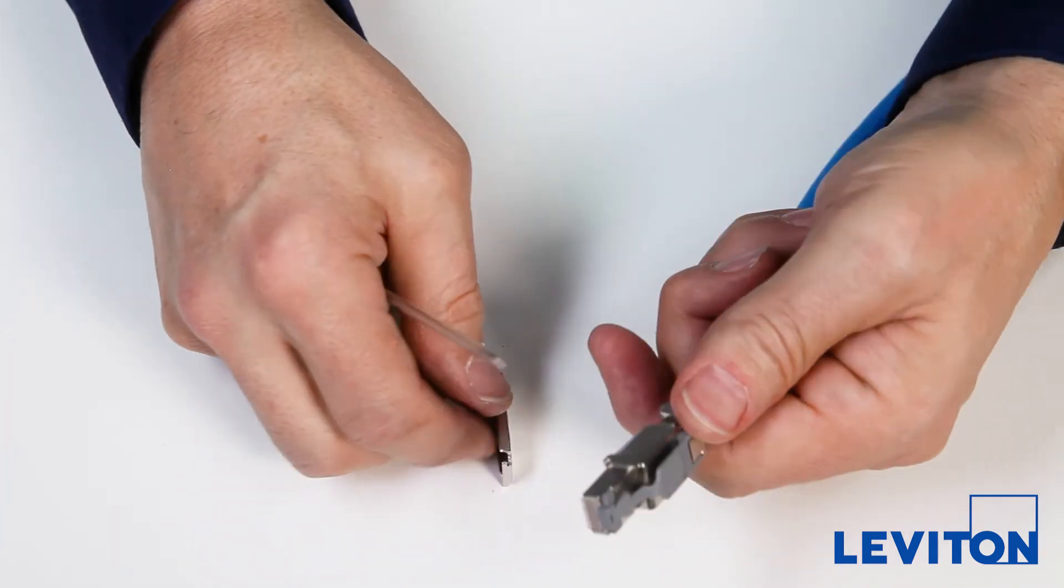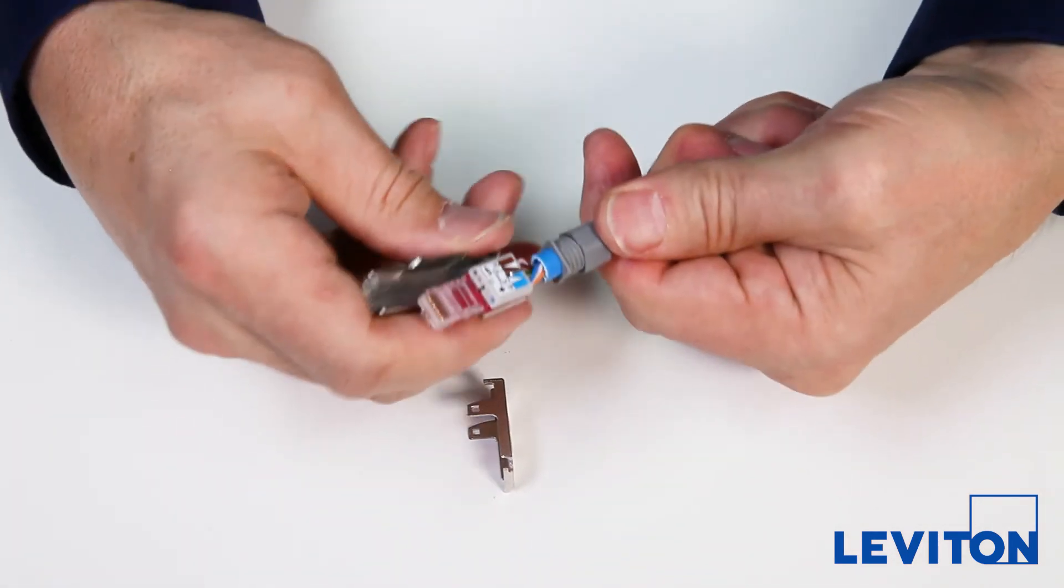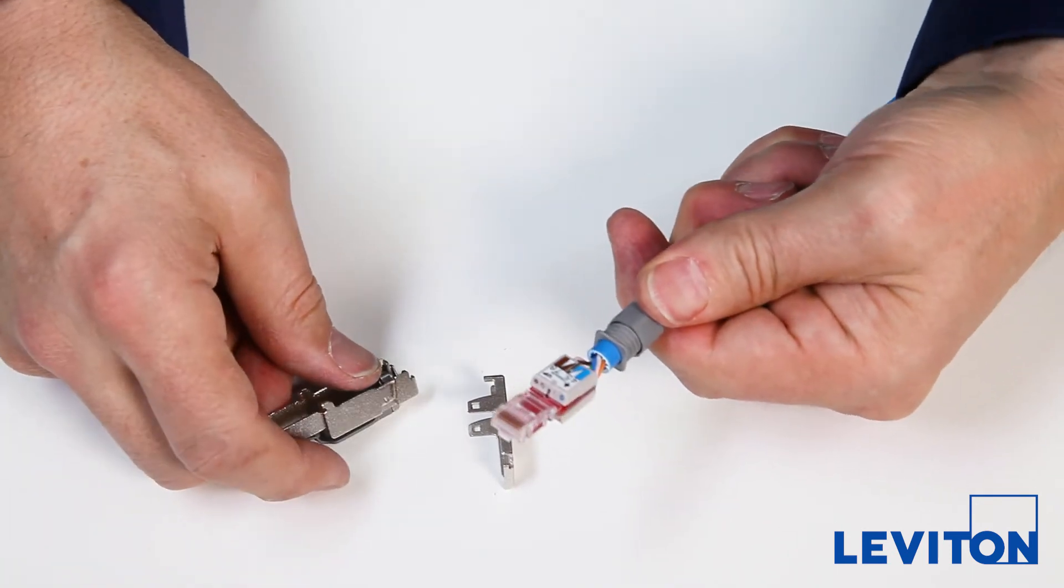If the latch points become bent, use channel lock pliers to gently squeeze them straight. Lift the internal circuit board wire manager off of the plug body.